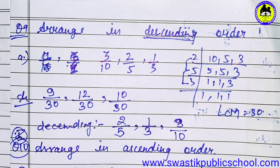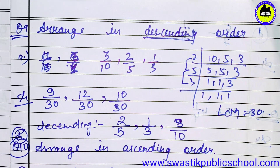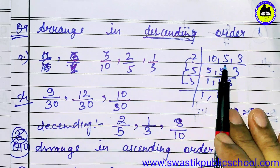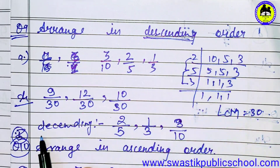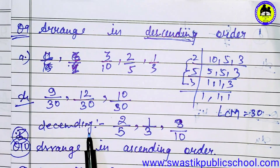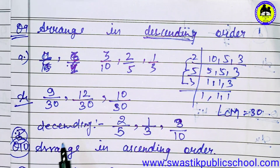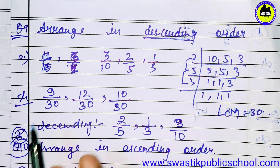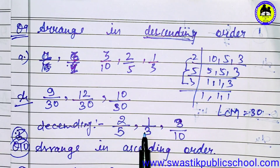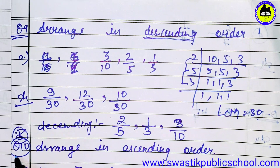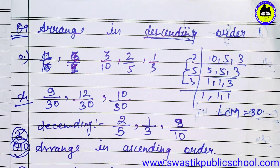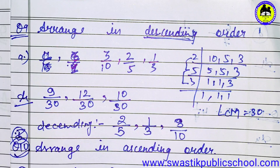If you have to do question number 10, it will be ascending order. Same as this — you will find the LCM. In ascending order, it will go from small to big. So question number 10 you will do on your own, and also the remaining parts of question number 9 and question number 11.